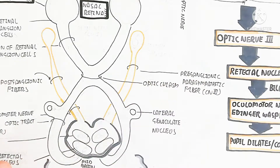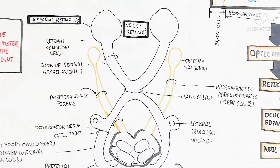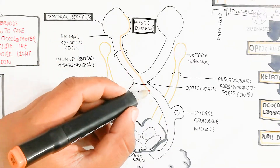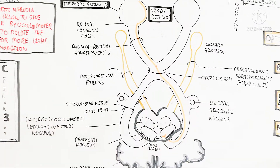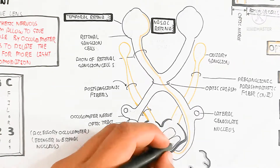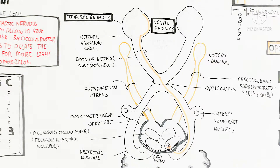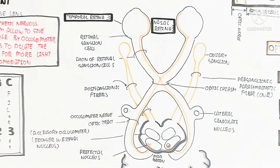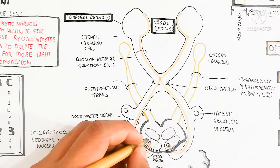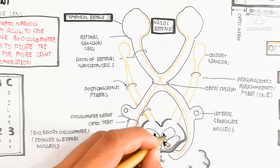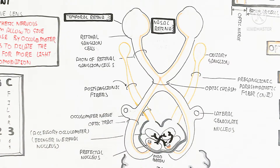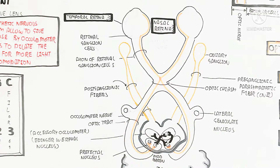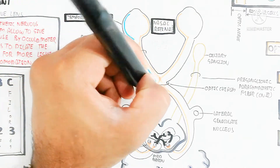This is the optic chiasm. Here is the pre-ganglionic parasympathetic fiber — cranial nerve 3. After the crossing at the optic chiasm, the nasal field of the retina transmits the signal through the optic nerve toward the pre-tectal nucleus. The pre-tectal nucleus interconnects with the Edinger-Westphal nucleus and accessory oculomotor nucleus. This is why one eye absorbing light causes the same mechanism of pupil dilation or constriction in the other eye — because they are interconnected.